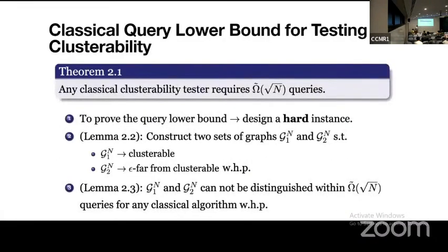This is the main theorem: any classical clusterability tester requires at least square root of N queries. In order to prove this lower bound, the idea is to devise a hard instance. The hard instance contains two sets of graphs: G1 and G2, such that all the graphs in G1 are classable, and most graphs in G2 are epsilon-far from classable with high probability. We then show that G1 and G2 cannot be distinguished within square root of N queries with high probability on a classical machine.